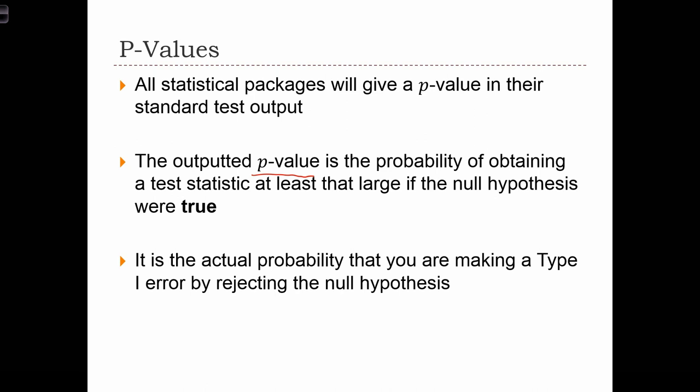In other words, it's the actual probability that you're making a type 1 error. It's the probability that you're rejecting the null hypothesis even though the null hypothesis is true.